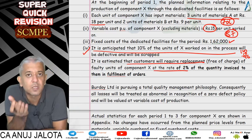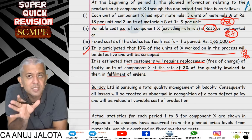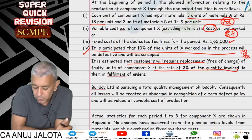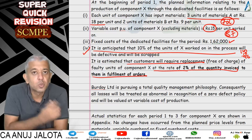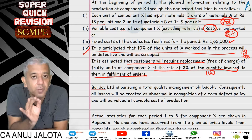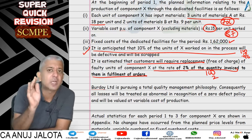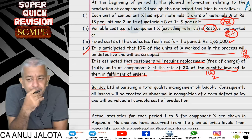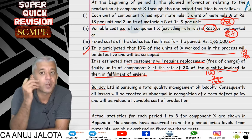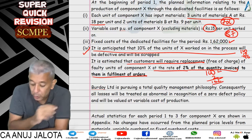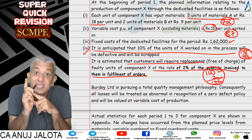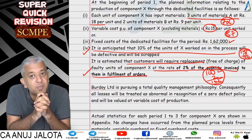Replacements are at the rate of 2 percent of quantity invoiced to the customer. So if you sell 100 units and 2 percent are defective, that means 2 units come back. You then produce 2 more units and send them. So to ultimately sell 100 units, you need to produce 102 units. Defectives are internal failure cost; replacements are external failure cost.